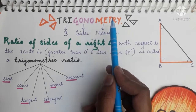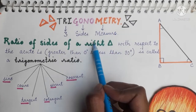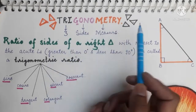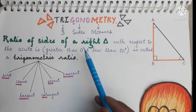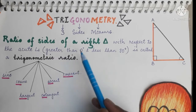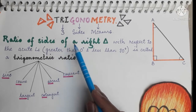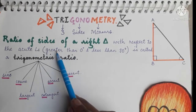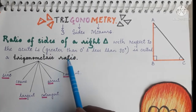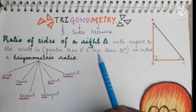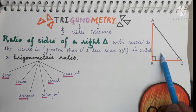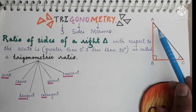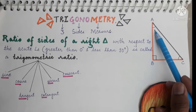Now, which kind of triangle? A right triangle. Always remember: trigonometry is only applicable to a right triangle. See this — I have drawn all the right triangles. Next is a trigonometric ratio: the ratio of sides of a right triangle with respect to the acute angles is called a trigonometric ratio.